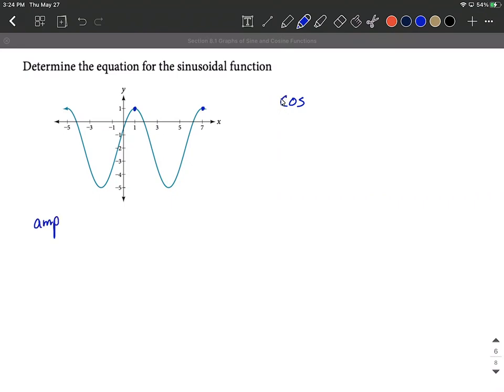So the amplitude would be some change in the number out in front here, basically how high and how low it goes. So you're looking for a multiple that would sit out in front of the entire function. One way to compute this is you can do one half and then multiply it by the absolute value of the very highest value you get to. So in this case, it's a y value of one minus the very lowest y value you get to. So this very lowest y value looks like it's negative five.